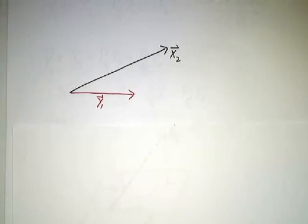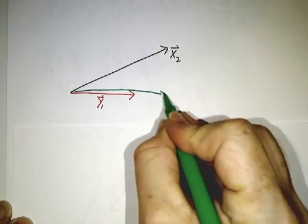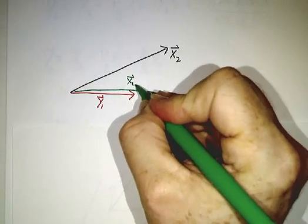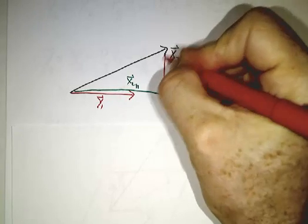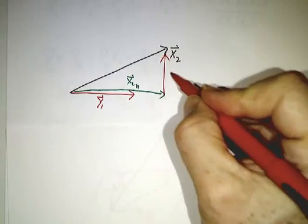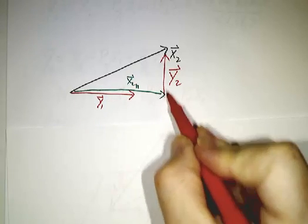And then once we have our first y vector, we look at our second x vector, and we can break that up as a sum of two pieces. There's a piece that's parallel to y1, and we usually call that x2 parallel, and then we have a piece that was perpendicular to y1. It's the piece that's perpendicular to y1 that we want to keep. We throw away the part that's along y1, and we keep what's left.